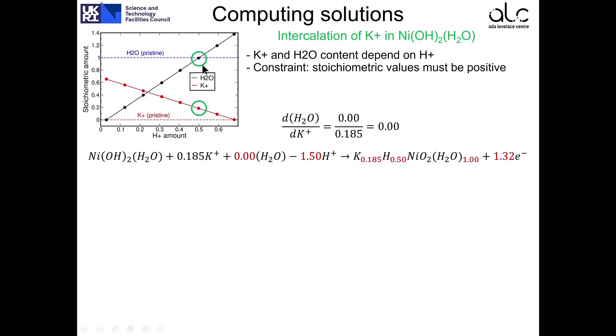So let's consider a different solution. This one, for example. In this case, we have 0.5 protons, 0.85 potassium and 1 water. So you see that the content of water has not changed.